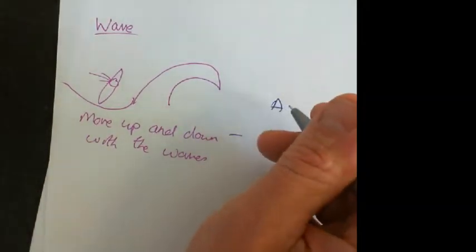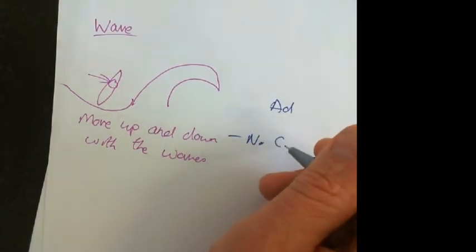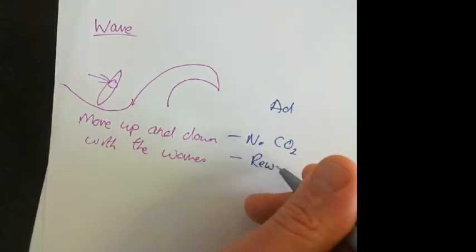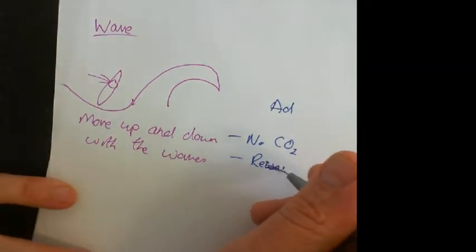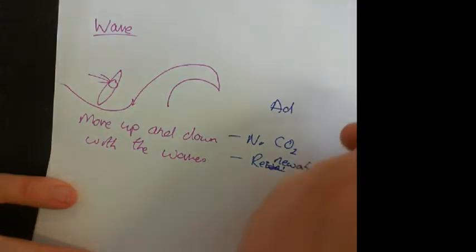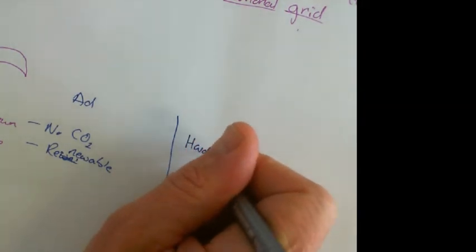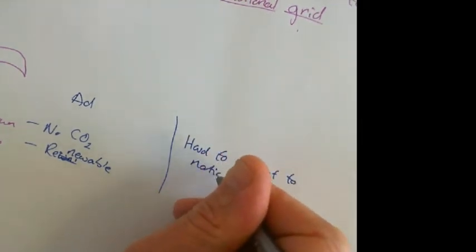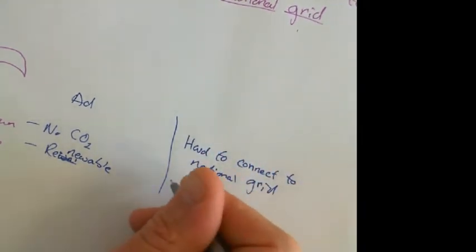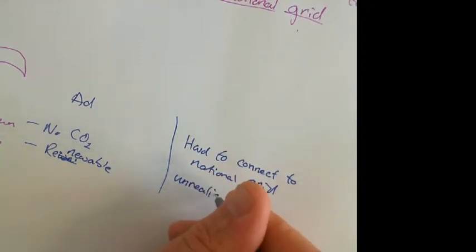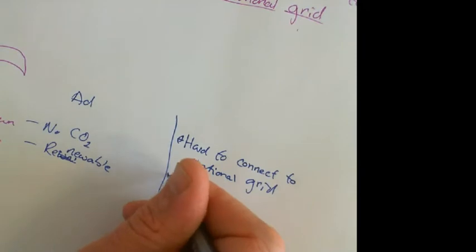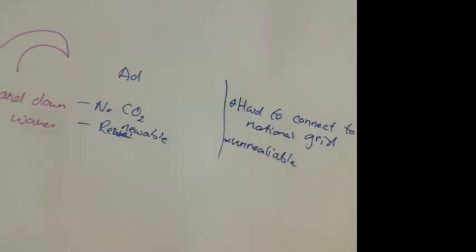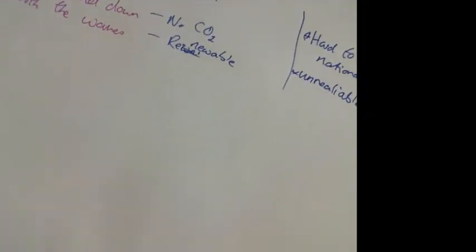So the advantages, again, are no CO2 and it's renewable. But it's the same problems. Hard to connect to the national grid. Unreliable. Currently, both of these two are a lot more expensive than fossil fuels, which is the other reason why they're not done currently.